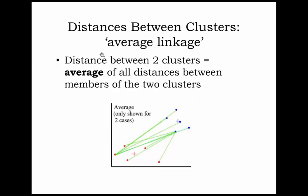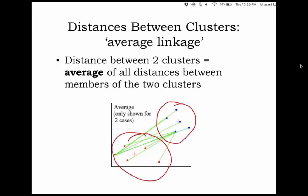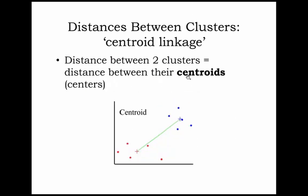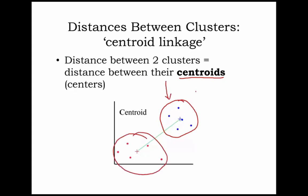The third option is average linkage: you calculate the distance between all pairs of records across the two clusters — this to this, this to this, this to this — take all those values and compute a simple average to get the distance between the two clusters. Then you have centroid linkage, which we will discuss when we cover k-means clustering tomorrow. You calculate a centroid for each cluster and then calculate the distance between those centroids.